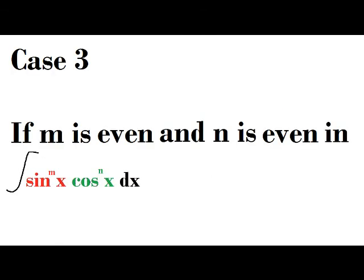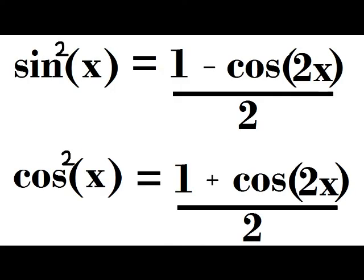The third case is more simple, where m and n are even. And all you do is, for sine squared of x, you replace it with 1 minus cosine 2x over 2. And for cosine squared of x, you do 1 plus cosine 2x over 2. And then you just solve like you would a normal integral.